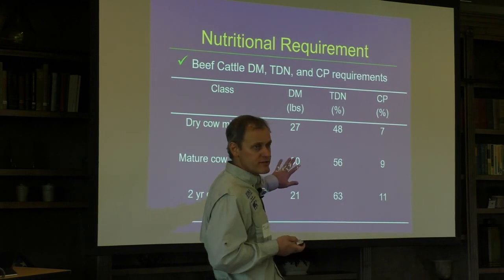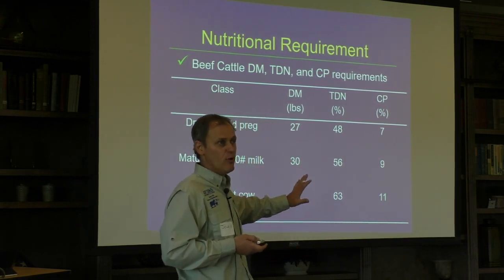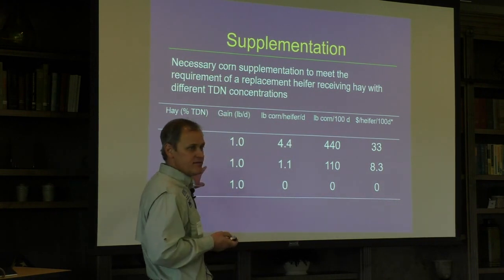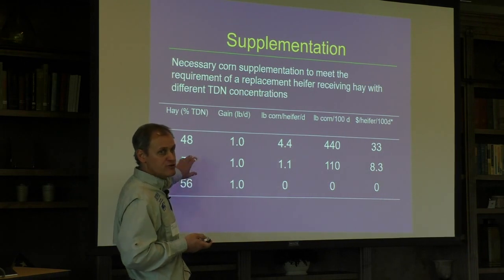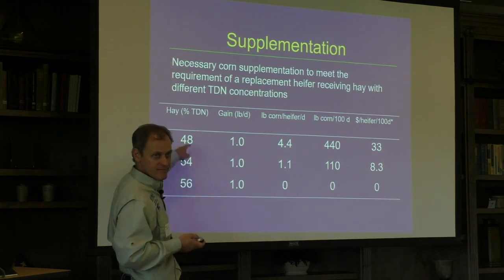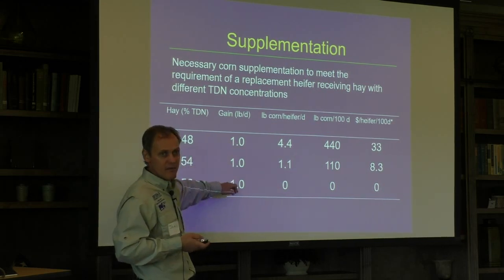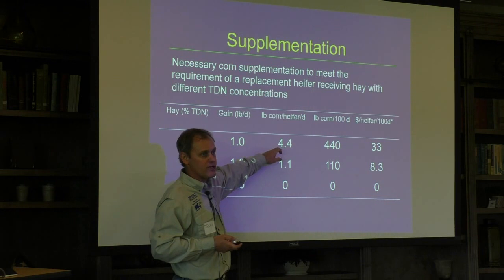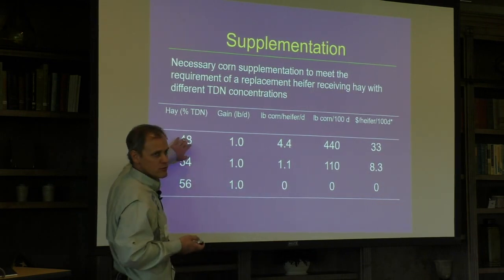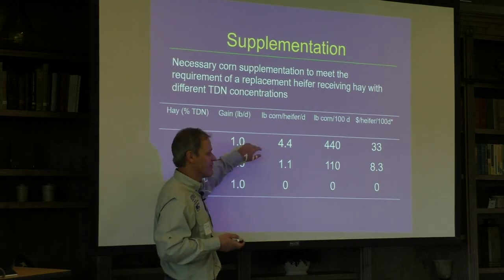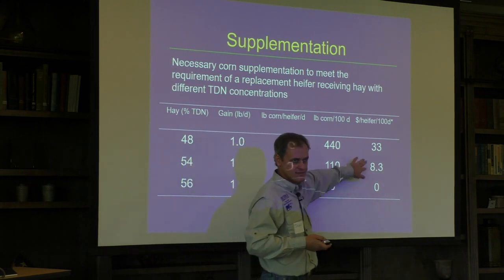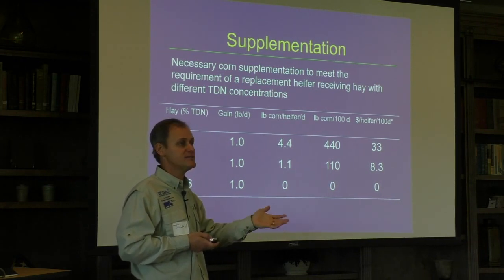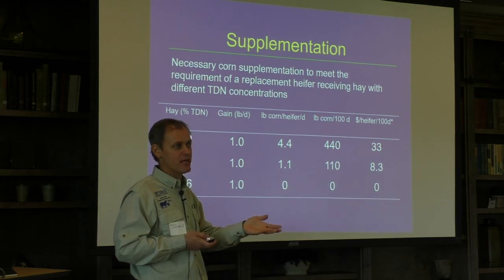When we think about quantity and quality, we are thinking about animal performance, because animals have needs for both. Here's an exercise showing how nutritive value affects your operation: if you are targeting the same average daily gain in heifers, a low nutritive value forage will require more corn supplement to achieve that gain. That translates directly into cost.